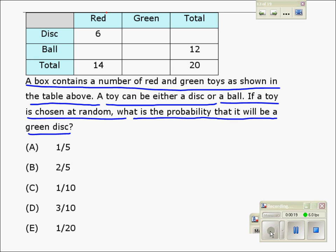In this table we have red toys and we have green toys. Further, the toy could be a ball or a disc. And we are asked to find the probability of a green disc. Now, the green disc is here.